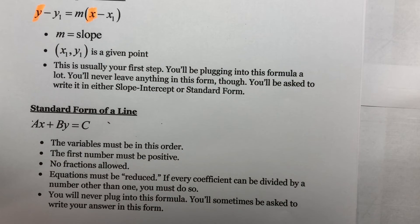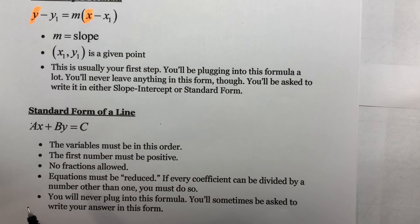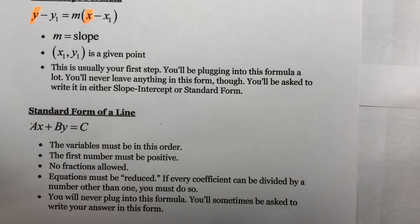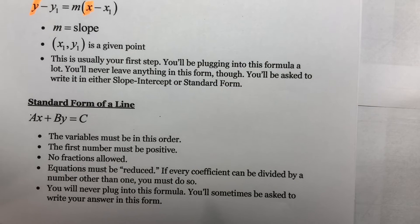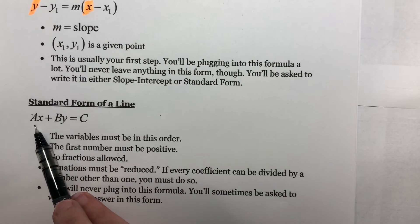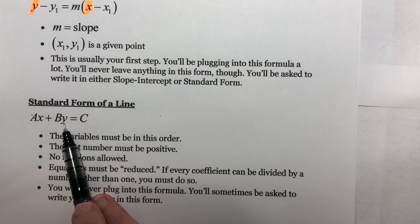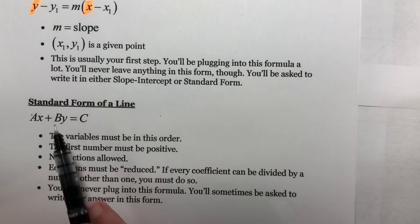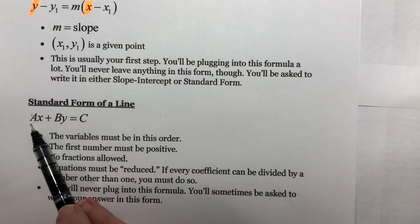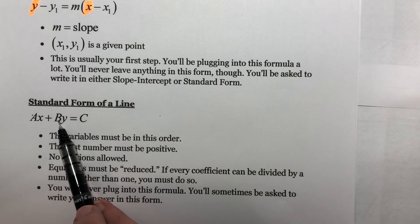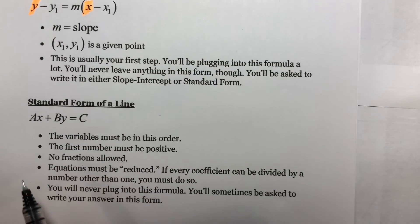Personally, I wouldn't be this picky, but I don't write MyMathLab and I don't grade it, so we have to be picky. Variables must be in this order: x variable first, then y, equal to some number. The first number must be positive—the coefficient of x must be positive. In rare cases where you don't have an x, the number in front of y needs to be positive. Whichever number comes first must be positive.